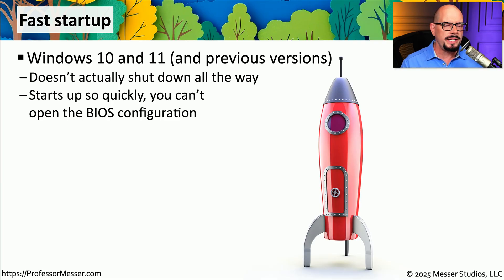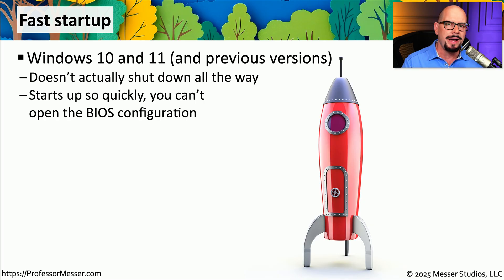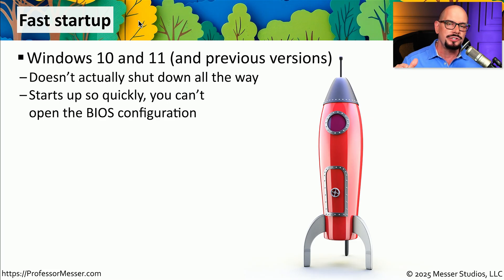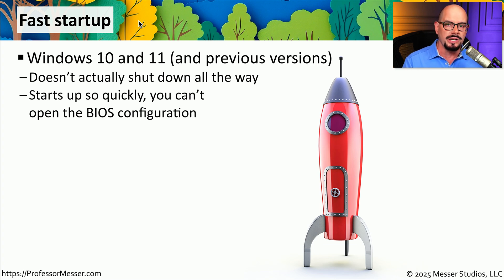If you're running Windows 10 or Windows 11, you may notice that when you start your computer, you don't receive any prompts to push special keys to start a BIOS. That's because these versions of Windows don't actually power all the way down when you turn your computer off. This is because they use a feature known as Fast Startup, which means your system only partially shuts down so that when you turn it back on, it can start up much faster. Unfortunately, this also means the BIOS setup process doesn't start, so there's no opportunity to press the key and enter the BIOS configuration.